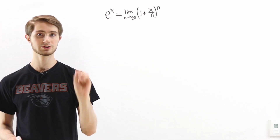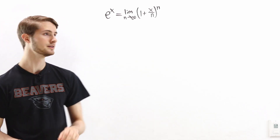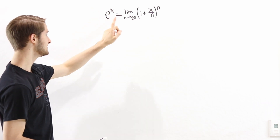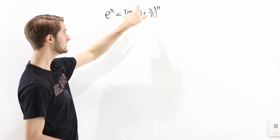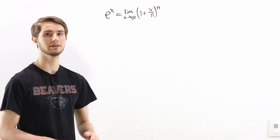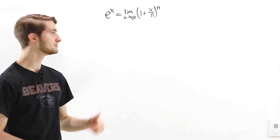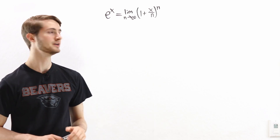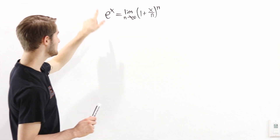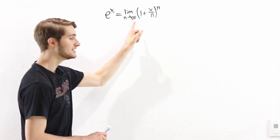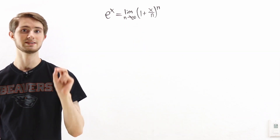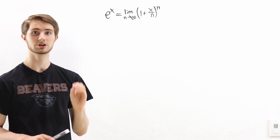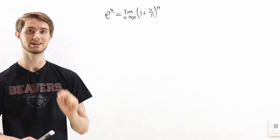We are going to talk about Euler's identity. For real numbers x, we know that e to the x equals the limit as n goes to infinity of 1 plus x over n to the power of n. The question in this video is: if we define e to the i theta using this limit, would Euler's identity still be true? Would we still get e to the i theta equals cosine theta plus i sine theta?